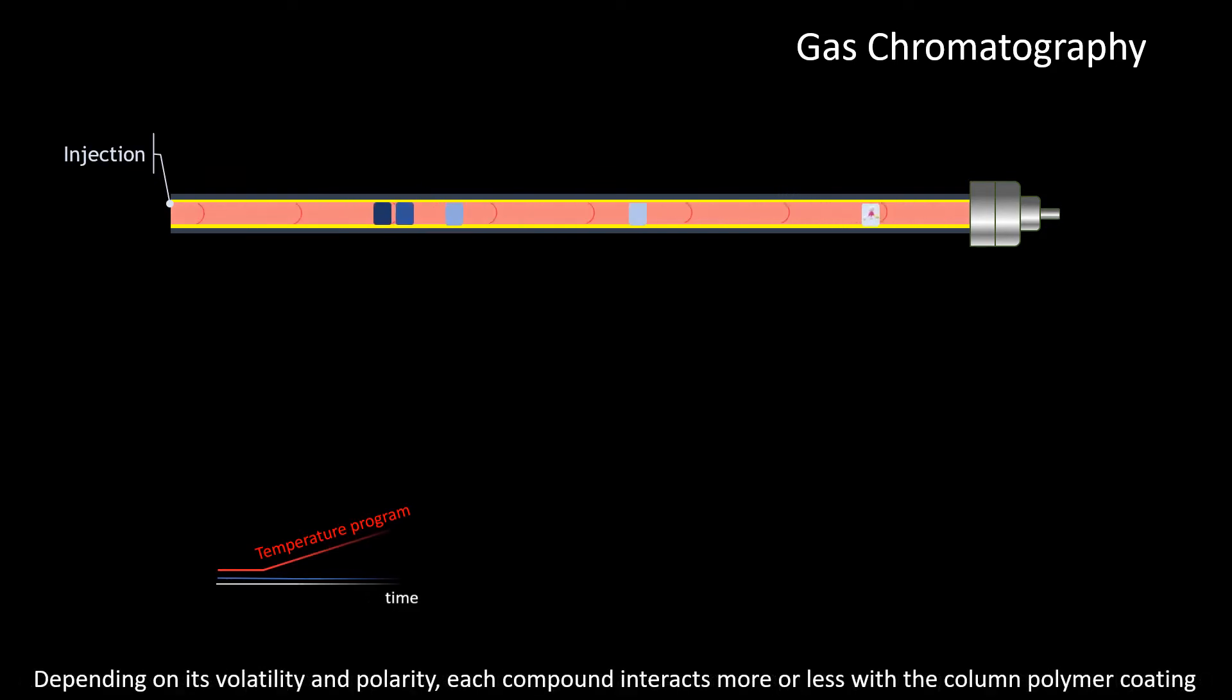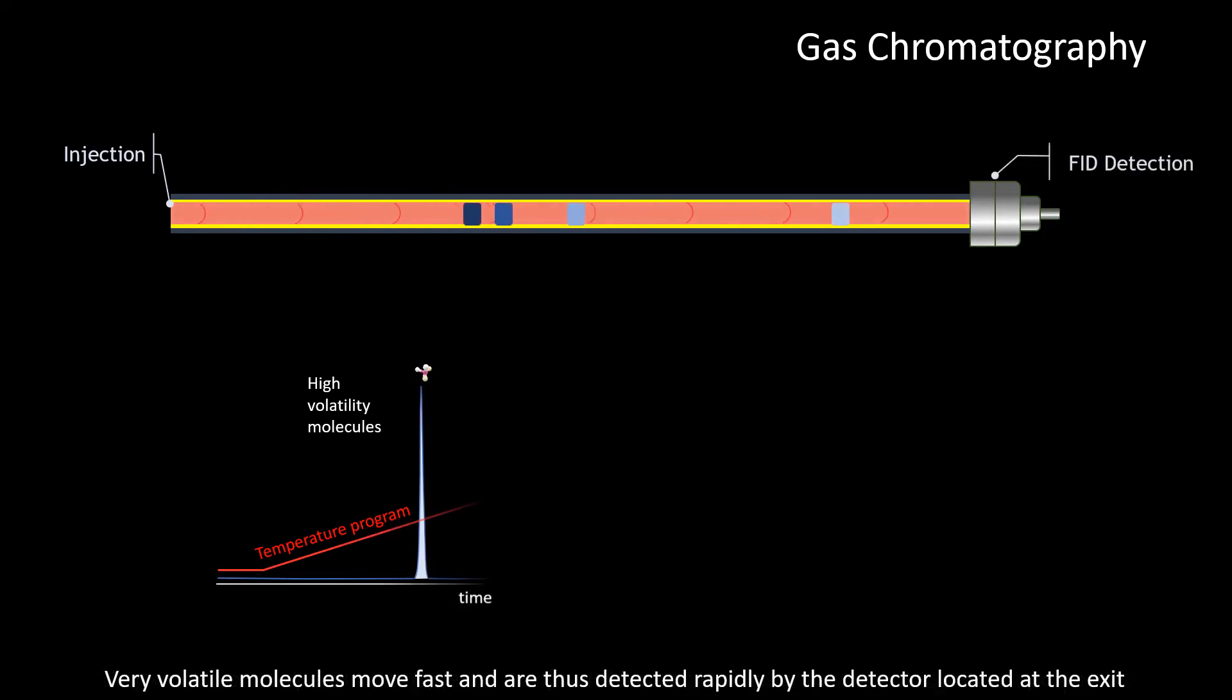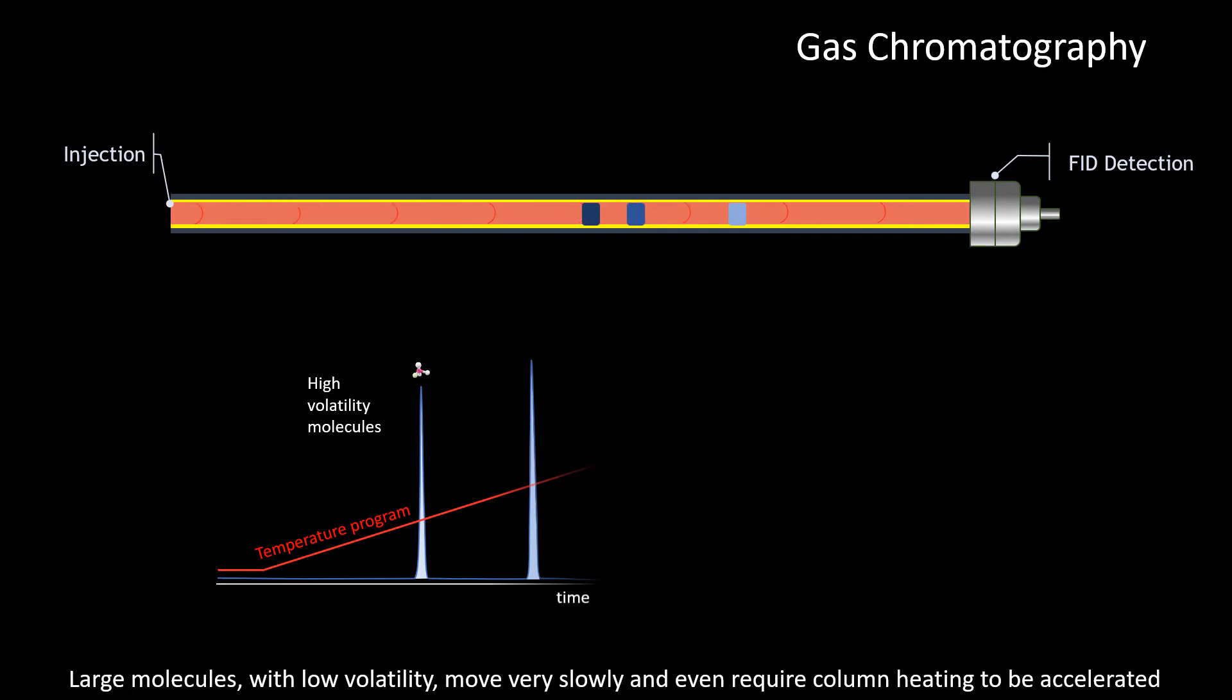Depending on its volatility and polarity, each compound interacts more or less with the column polymer coating. Very volatile molecules move fast and are thus detected rapidly by the detector located at the exit. Large molecules with low volatility move very slowly and even require column heating to be accelerated.